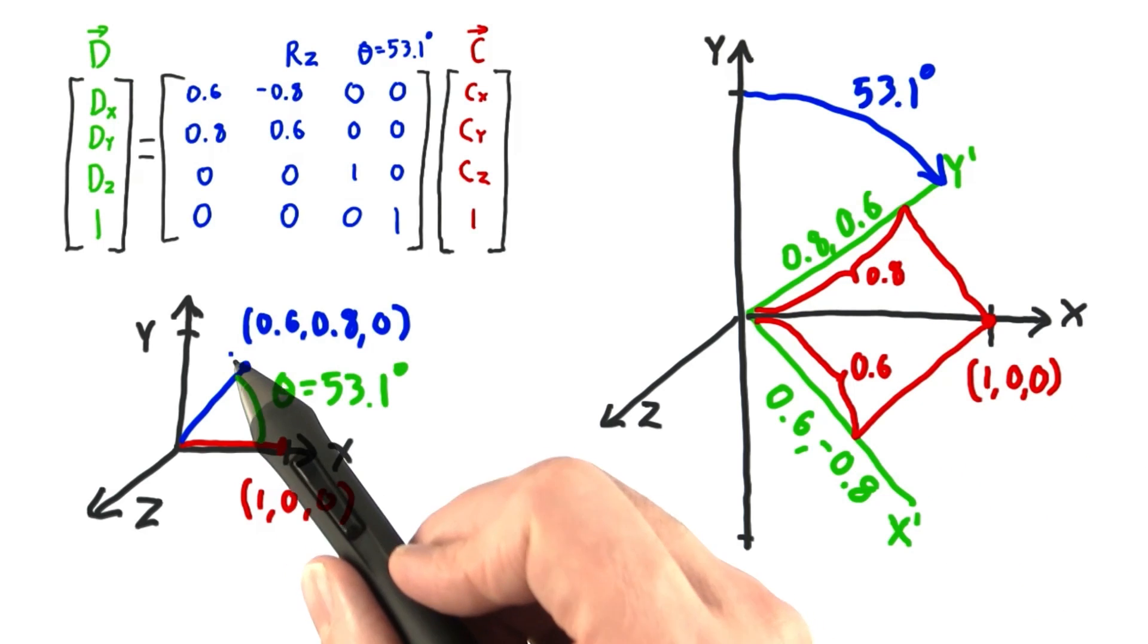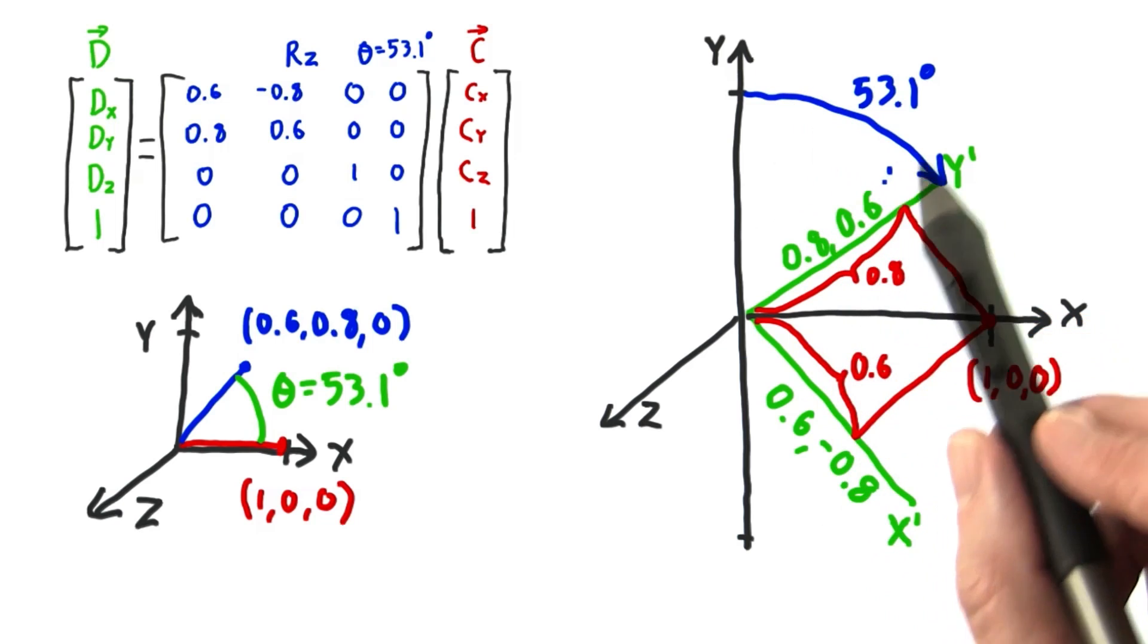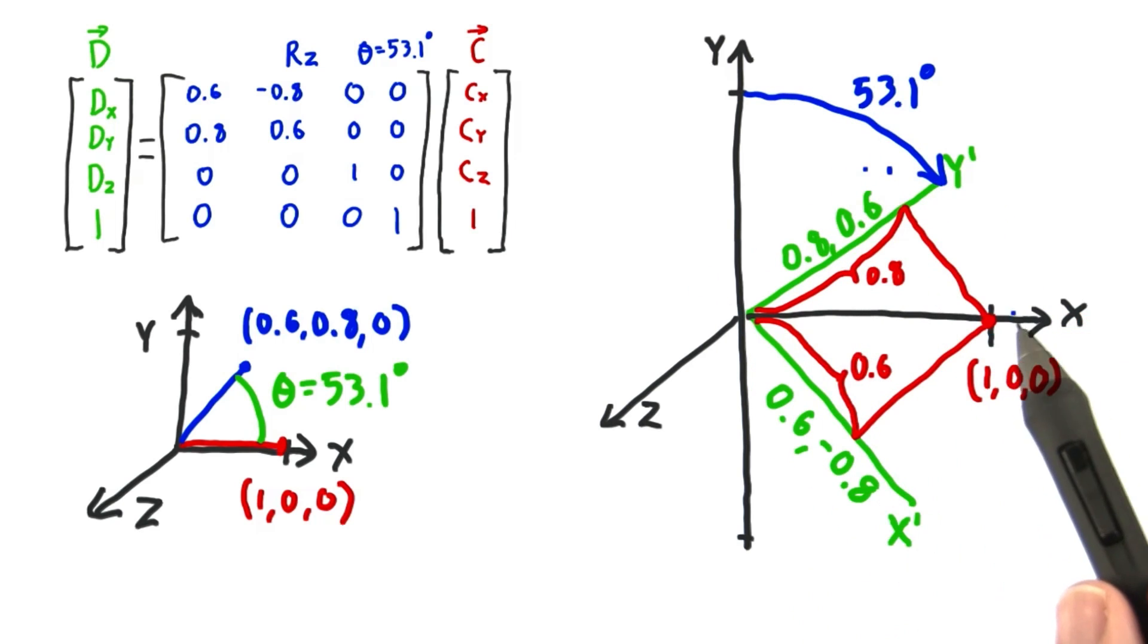On the left, we're rotating the coordinate with respect to the axes. On the right, we're rotating the axes and then seeing where the coordinate lies with respect to these axes. Either interpretation is correct and both have their strengths.